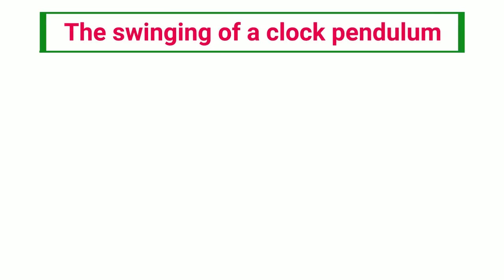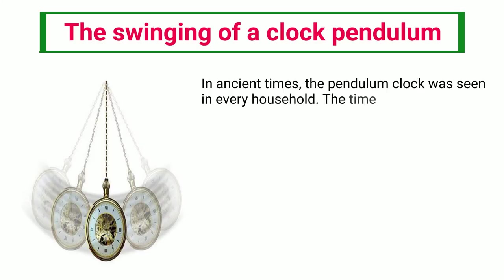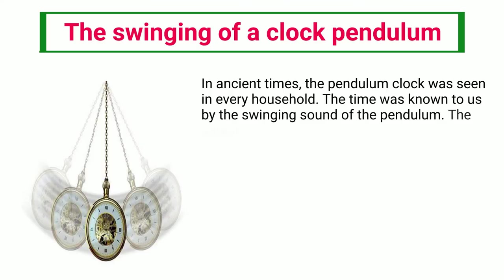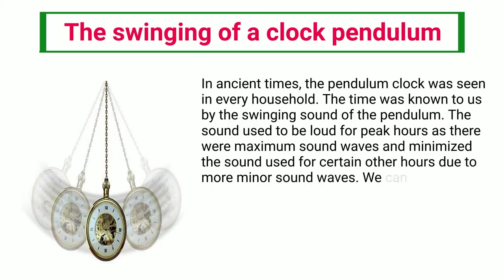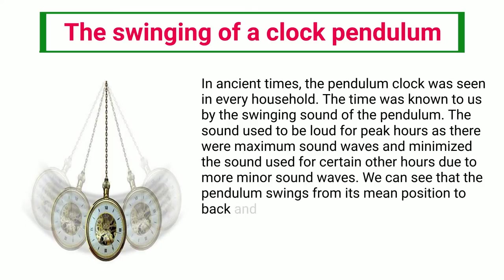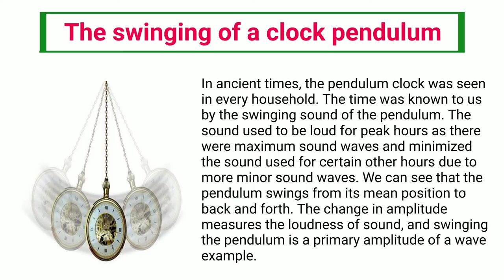The Swinging of a Clock Pendulum: In ancient times, the pendulum clock was seen in every household. The time was known to us by the swinging sound of the pendulum. The sound used to be loud for peak hours as there were maximum sound waves, and minimized for certain other hours due to fewer sound waves. We can see that the pendulum swings from its mean position back and forth. The change in amplitude measures the loudness of sound, and swinging the pendulum is a primary amplitude of a wave example.